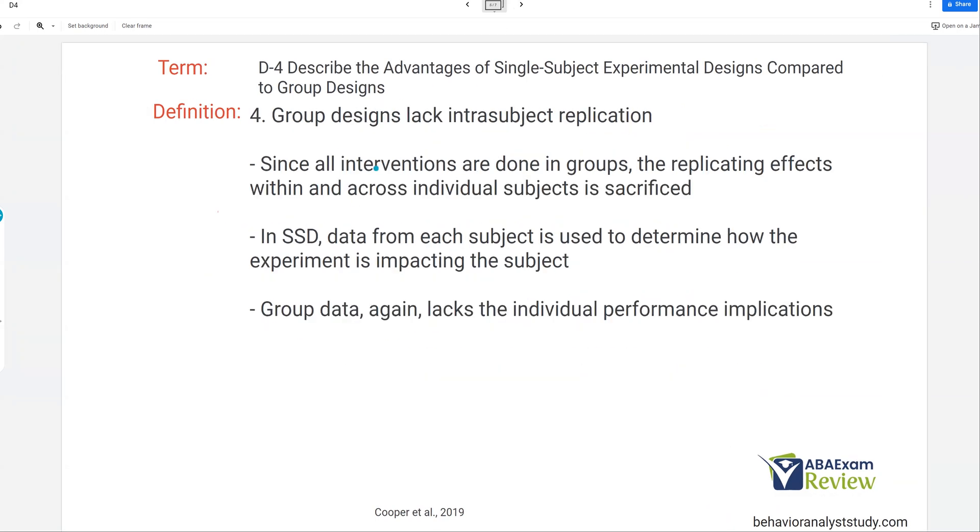And then, finally, group design lacks intra-subject replication. Now, replication is an issue across all sciences, and no science has perfected it. But since interventions are all done in groups, the effects across the individual subjects are sacrificed. So we can't really replicate subject to subject. It's all based on that group number. So if there are some outliers or anomalies within that group, we're not really capturing that. So when a single-subject designs, data from each subject is used to determine how the experiment is impacting the subject, and group data lacks the individual performance implications. So what we're really missing in group design are these individual performance implications. What does it say about the individual rather than the group?